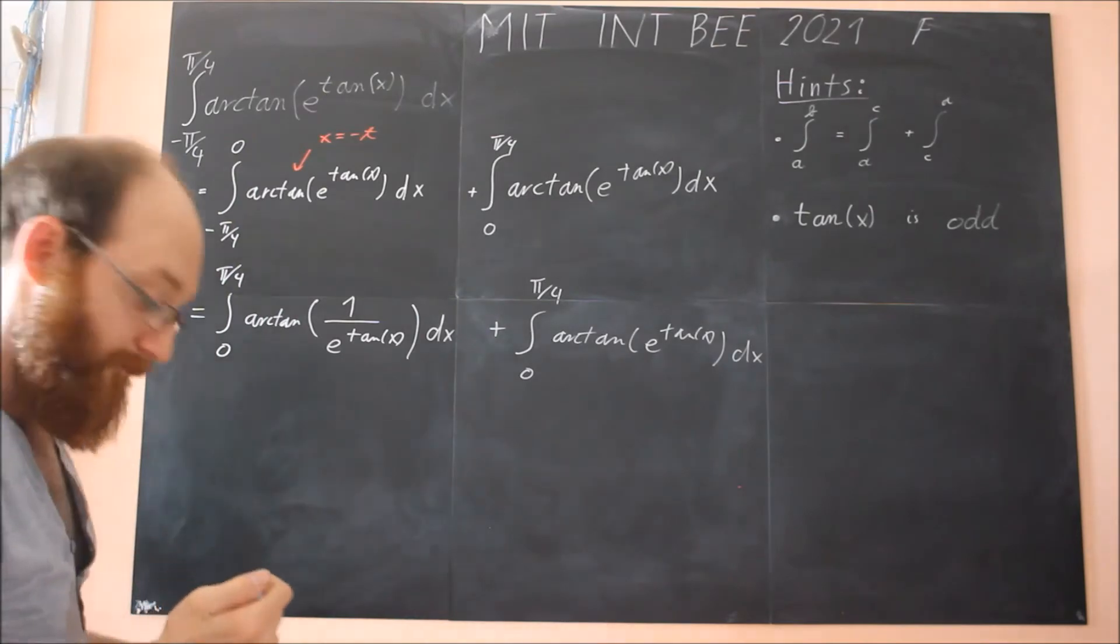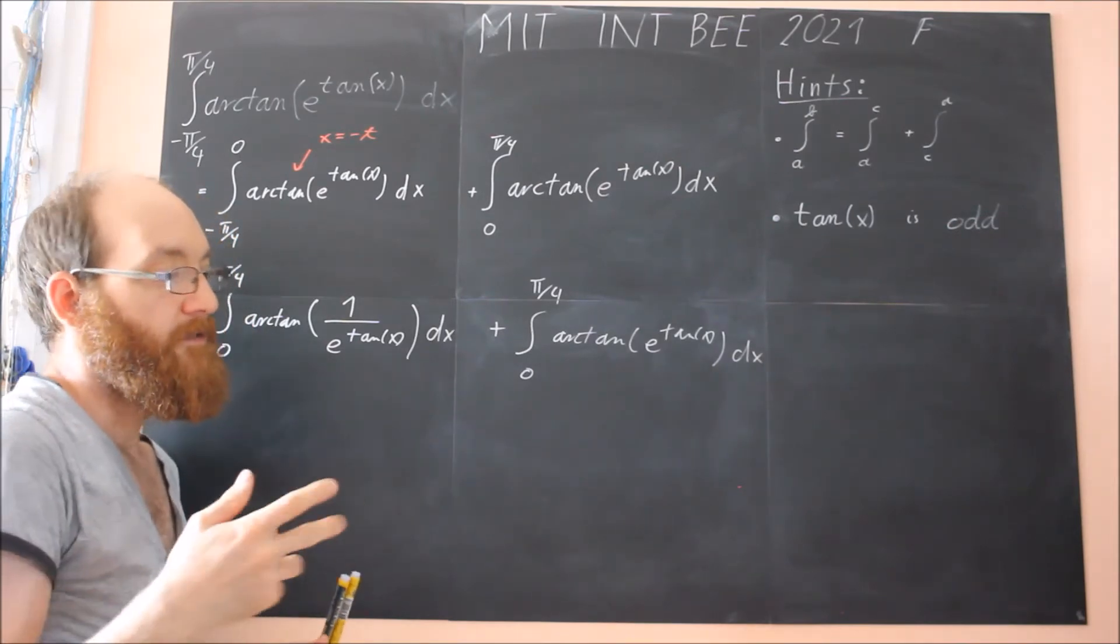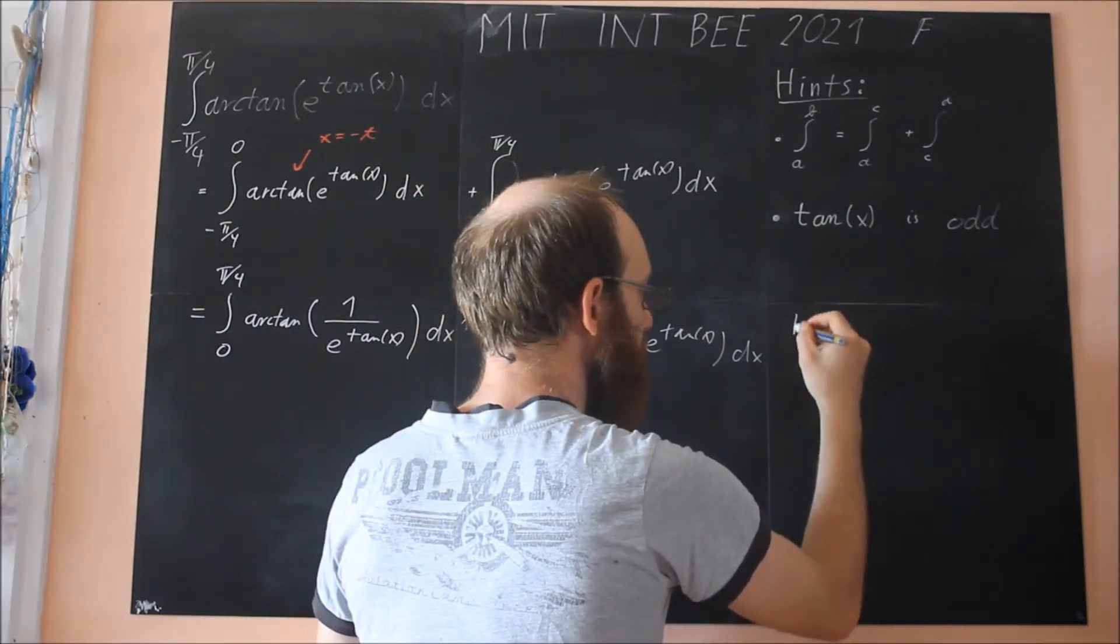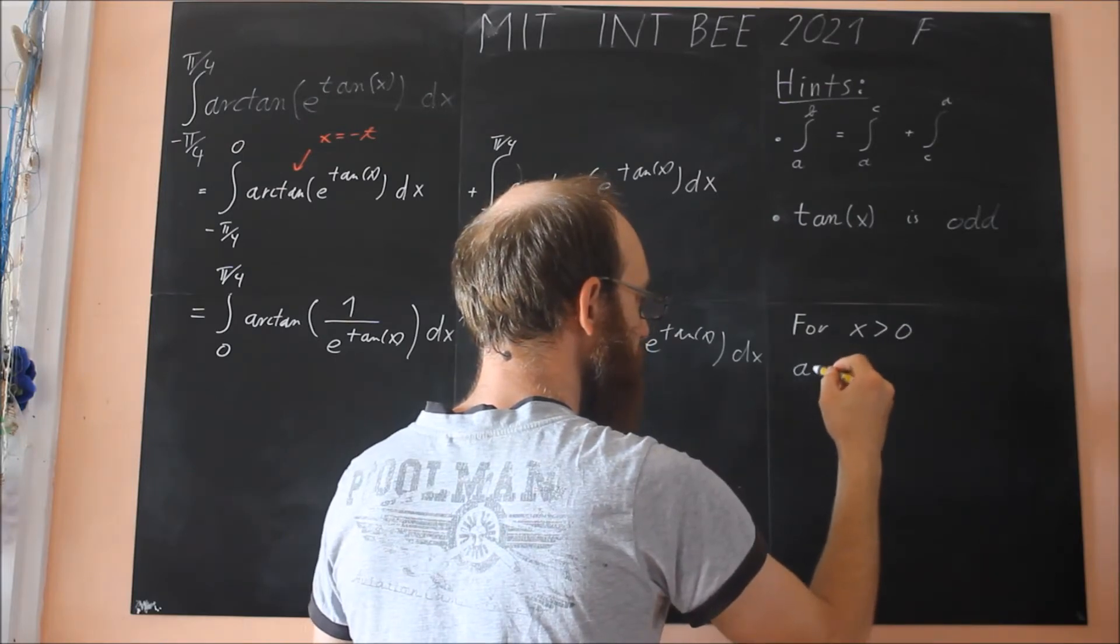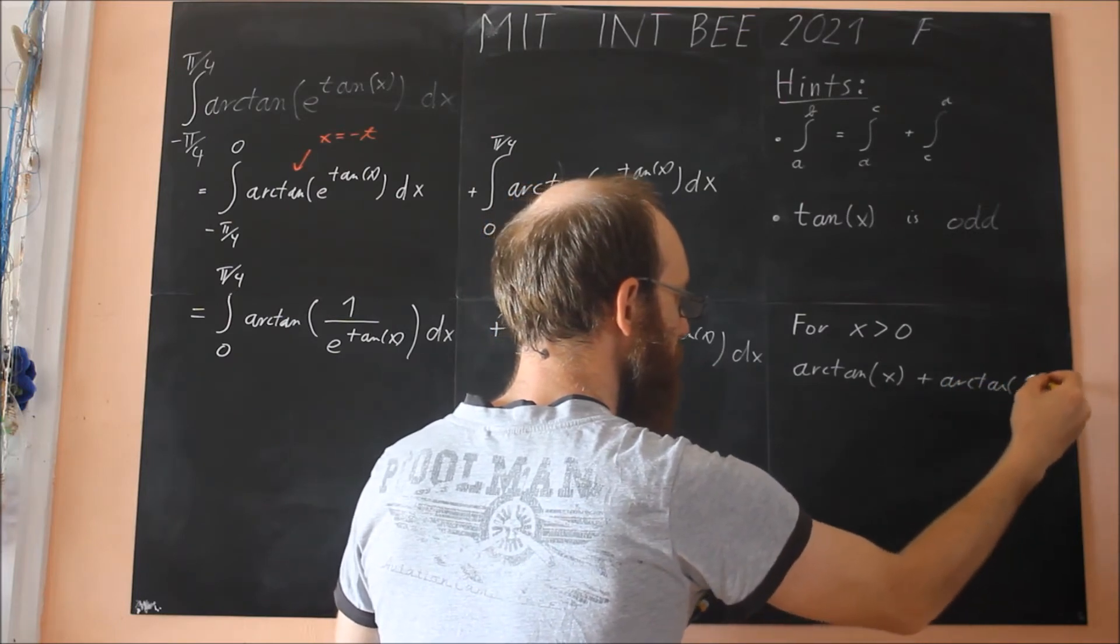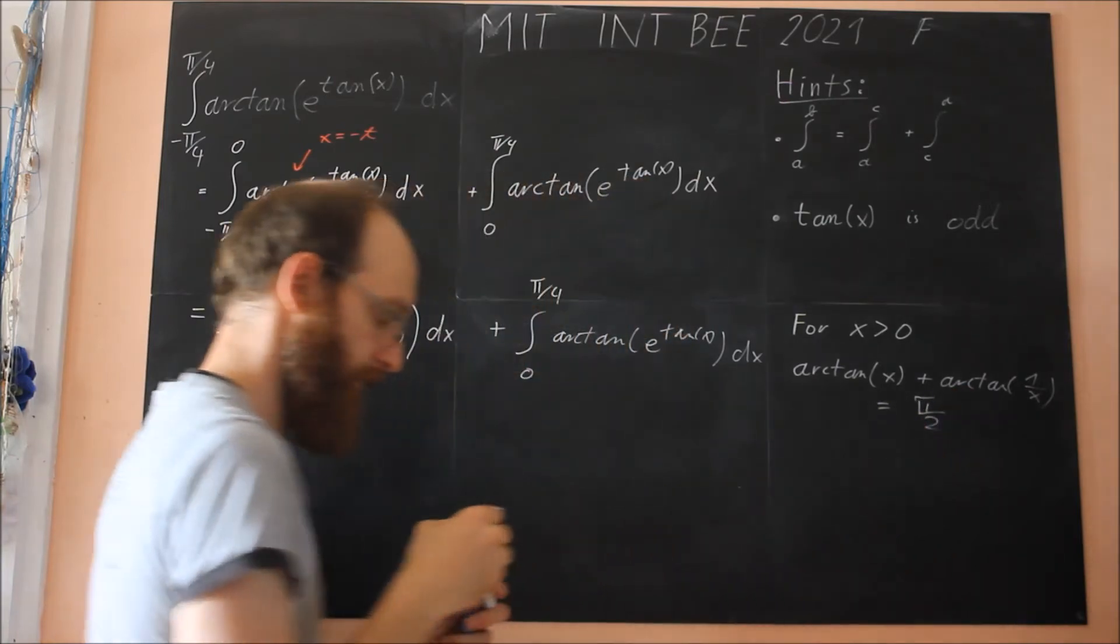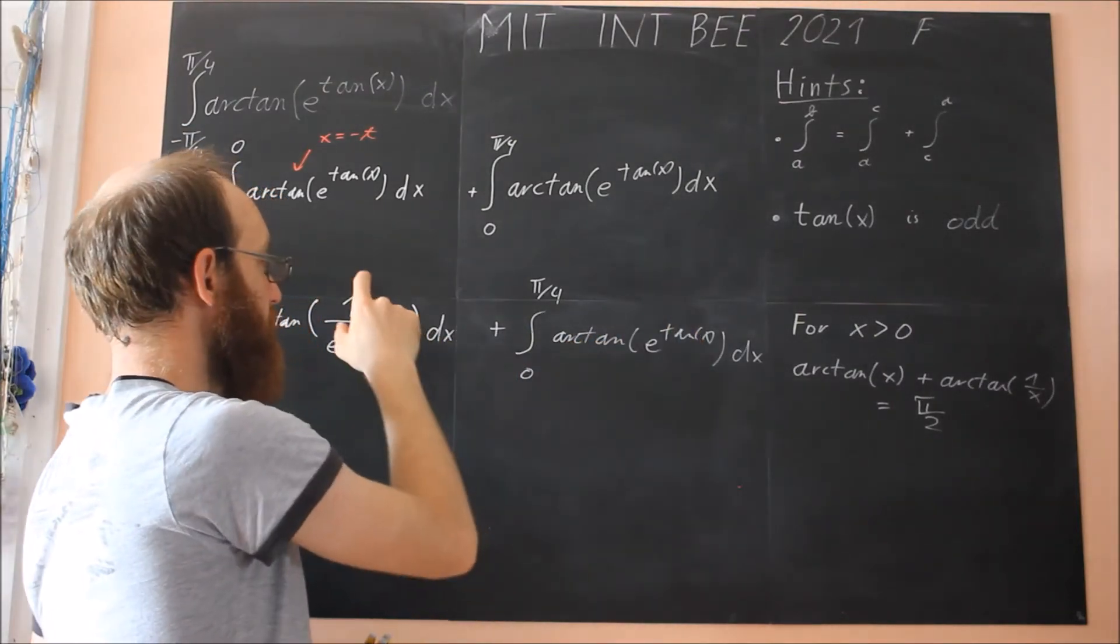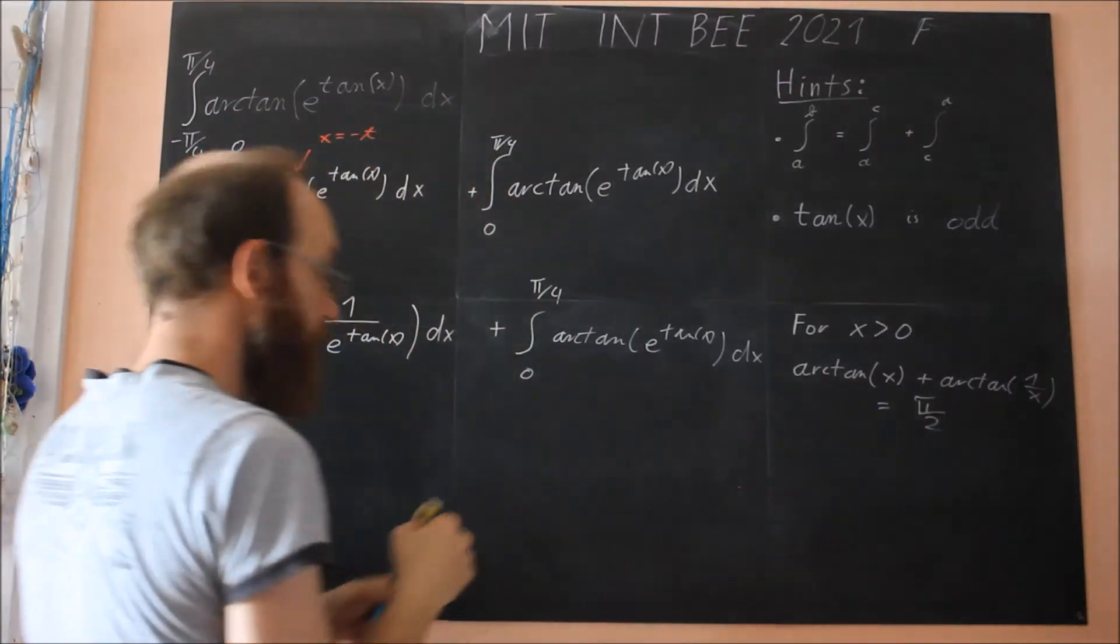And now, if you are familiar with some inverse trigonometric functions, for x positive, we have inverse tangent x plus inverse tangent one over x equals pi over two. And this is exactly what we have. Inverse tangent of something plus inverse tangent of the reciprocal. And this is pi over two.